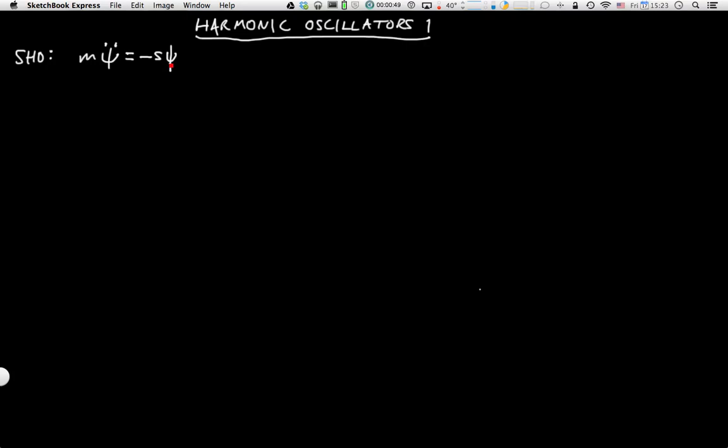If we were thinking about a pendulum, then ψ would be the angle of the pendulum, and s would give us something related to gravity, because pendulums are pulled back down by gravity. If we had a spring on a frictionless tabletop, which of course doesn't exist, then psi might be the displacement away from the rest position.